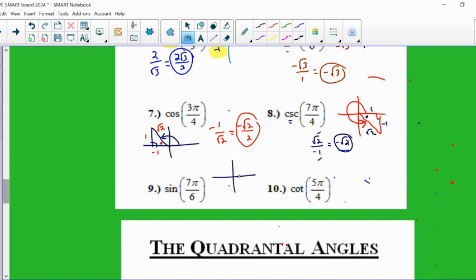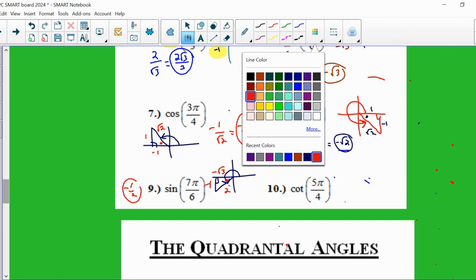So 7 pi over 6, that's a 30 degree reference angle into quadrant 3. It's a 210 degree angle, but more importantly, it leaves us with a 30 degree reference angle. Again, that's that little red dot. Opposite 30 is 1. Hypotenuse is 2. Adjacent is root 3. And in quadrant 3, both of those values would be negative. Sine opposite over hypotenuse. So negative 1 over 2, and it's already simplified.